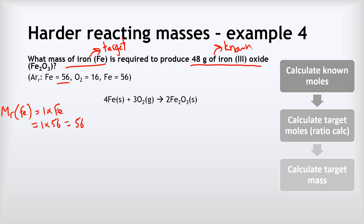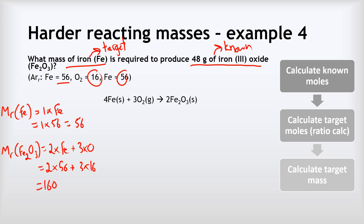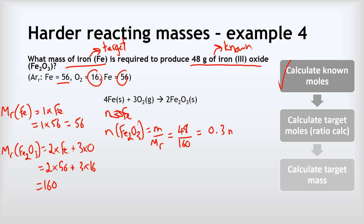For iron(III) oxide, the Mr of Fe2O3 equals 2 times Fe plus 3 times O, which is 2 times 56 for iron plus 3 times 16 for oxygen, giving 160. Now we calculate the moles of our known substance: the number of moles of Fe2O3 equals mass over Mr, which is 48 divided by 160, giving 0.3 moles of iron(III) oxide.